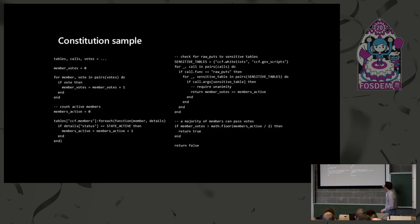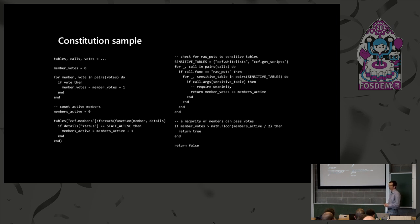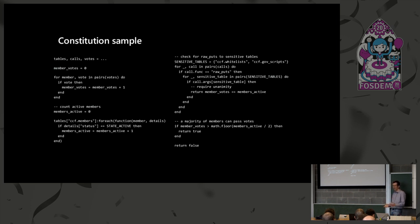There are some tables where stored information shouldn't be easy to modify. For example, there's a whitelist table of tables that governance is allowed to affect, and a governance script table storing this constitution. If people are going to replace the constitution, you're probably looking for something more than a simple majority — here we enforce unanimity: the total number of member votes must equal the total number of active members. The way this works is: every time a member sends a vote, their script executes to decide their vote, then the constitution runs again. If it passes, great; if not, the proposal is still pending. There's also a way to withdraw proposals.